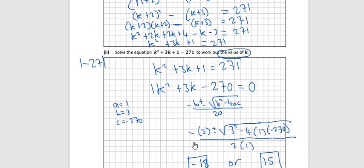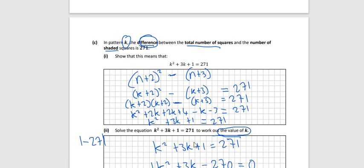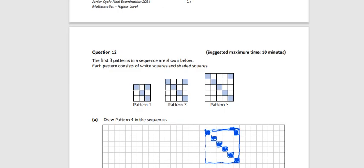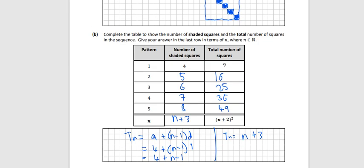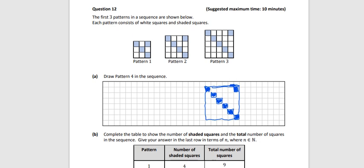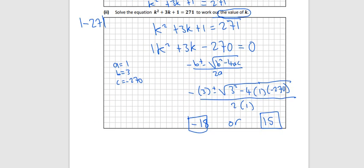But the reason is because it's a stage in the pattern. So if you look back up here at the first one - pattern one, pattern two, pattern three, pattern four - it's impossible to get a negative, like a minus 18th pattern would be impossible. If you think about it, you can't have like, if you have a first pattern, second pattern, third pattern, you can't go to a minus 18th pattern - it wouldn't make sense. So we get rid of the minus 18. So 15 is the answer. That's all for question 12.